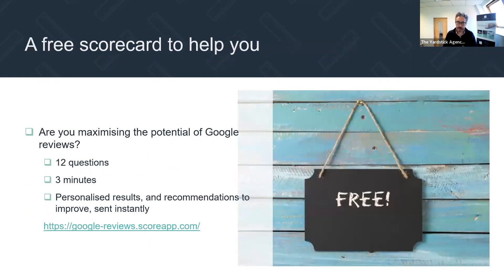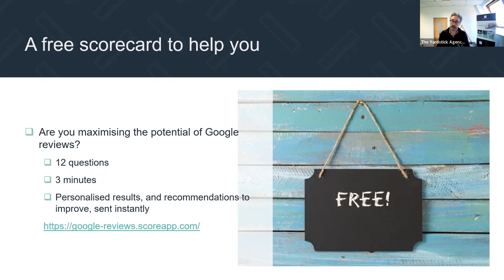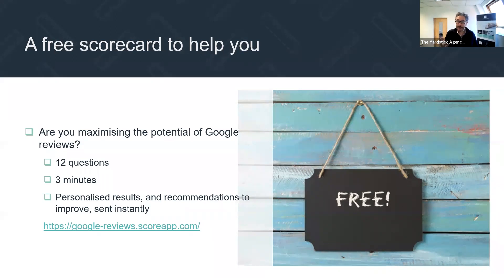To help you understand how well you are doing on the Google review front, we've created our third free scorecard. We've done scorecards on the digital journey to your door and on your fees page — we've had over 200 people complete those. This third one is about Google reviews: are you maximizing the potential? It's 12 questions, takes about three minutes, and you'll get the results instantly on your screen. All you've got to do is leave your name and email address — we're not about to start spamming you. It's genuinely there to help you.